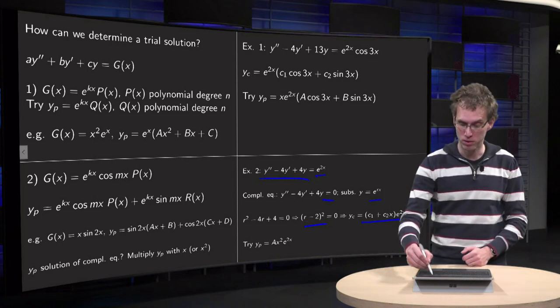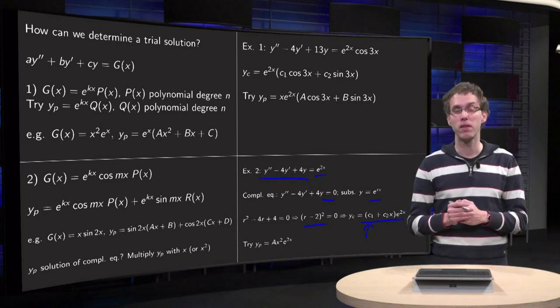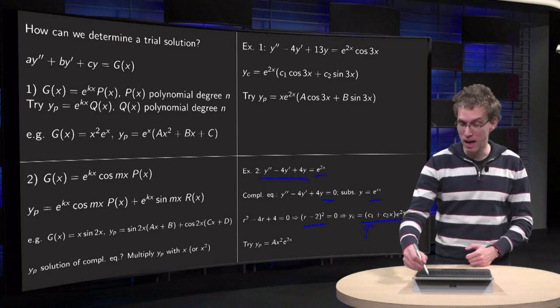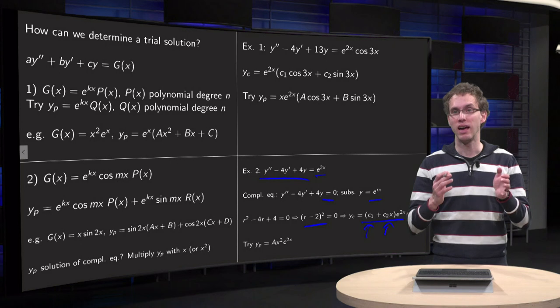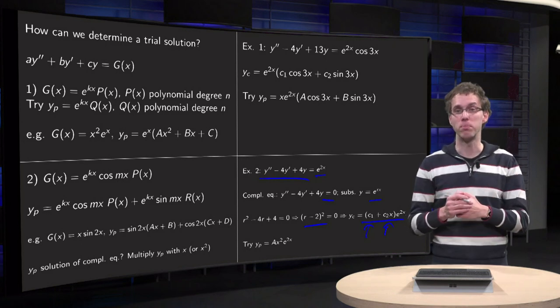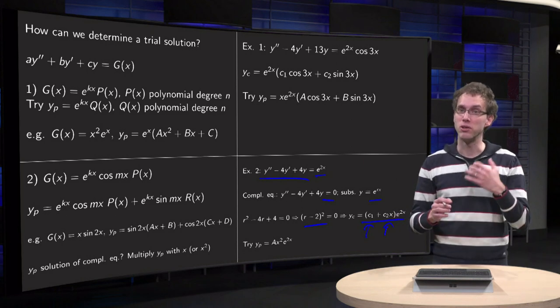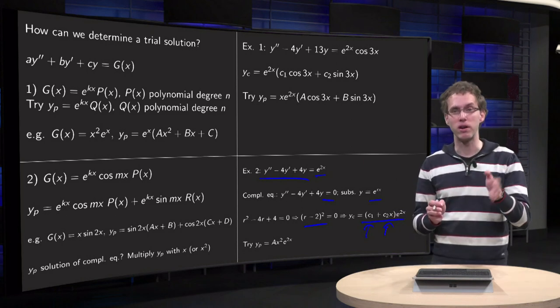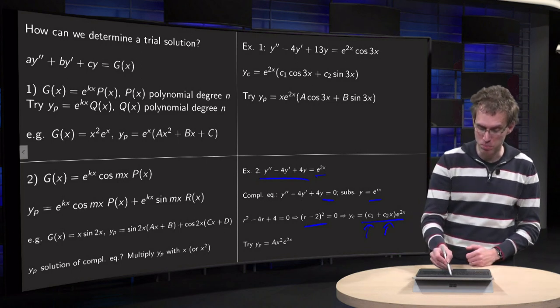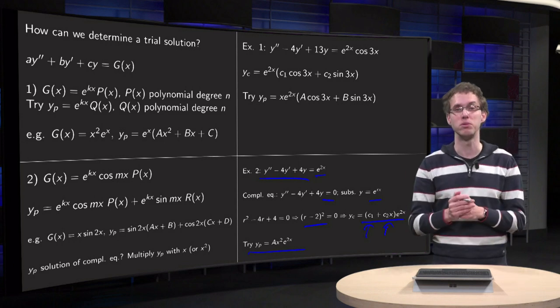So you see that trying y_p equals A times e to the power 2x won't work, because that one is already in your complementary solution. Adding 1x won't help you either, because if you would try something like A times x times e to the power 2x, that is also already part of the complementary equation, so it will vanish as well. So you see that multiplying with x doesn't help you, so in a case like that, you would multiply with x squared and try as your particular solution A times x squared times e to the power 2x.